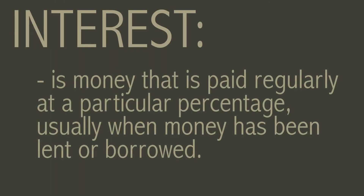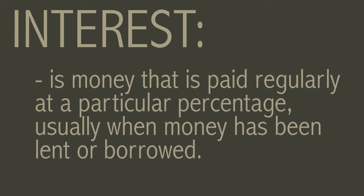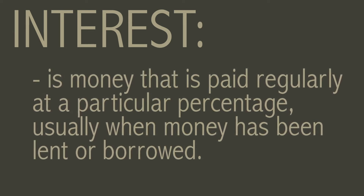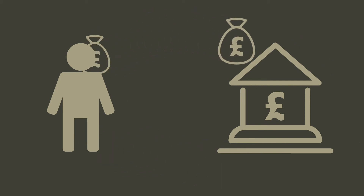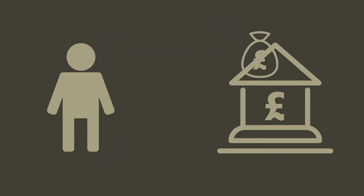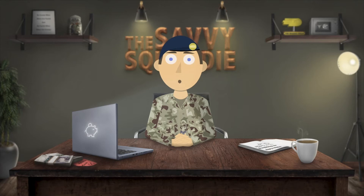Interest is money that is paid regularly at a particular percentage, usually when money has been lent or borrowed. If you take a loan out from a bank, you pay them back what you borrowed as well as extra, which is the interest. Equally though, banks will pay you interest on your savings, because you are loaning them your money and they pay you back with interest.